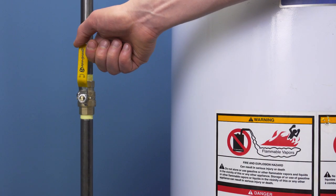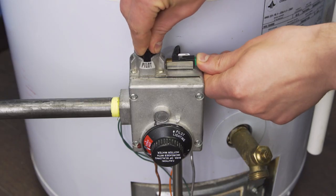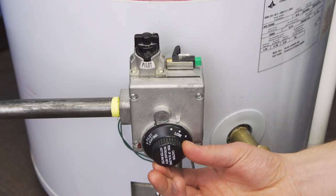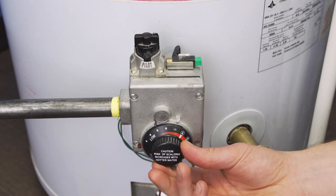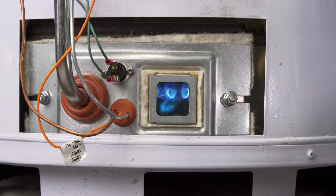First turn on the gas to the water heater. Now relight the pilot. Next set the control to the desired heat setting. The main burner should fire up.